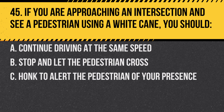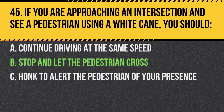Question 45. If you are approaching an intersection and see a pedestrian using a white cane, you should: a. Continue driving at the same speed. b. Stop and let the pedestrian cross. c. Honk to alert the pedestrian of your presence. Answer: b. Stop and let the pedestrian cross. A white cane indicates the pedestrian may be blind or partially sighted, requiring extra caution.